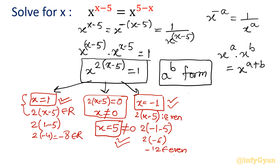Using the a^b form case analysis — Case 1, Case 2, Case 3 — we obtain three solutions: x = 1, x = 5, and x = −1.